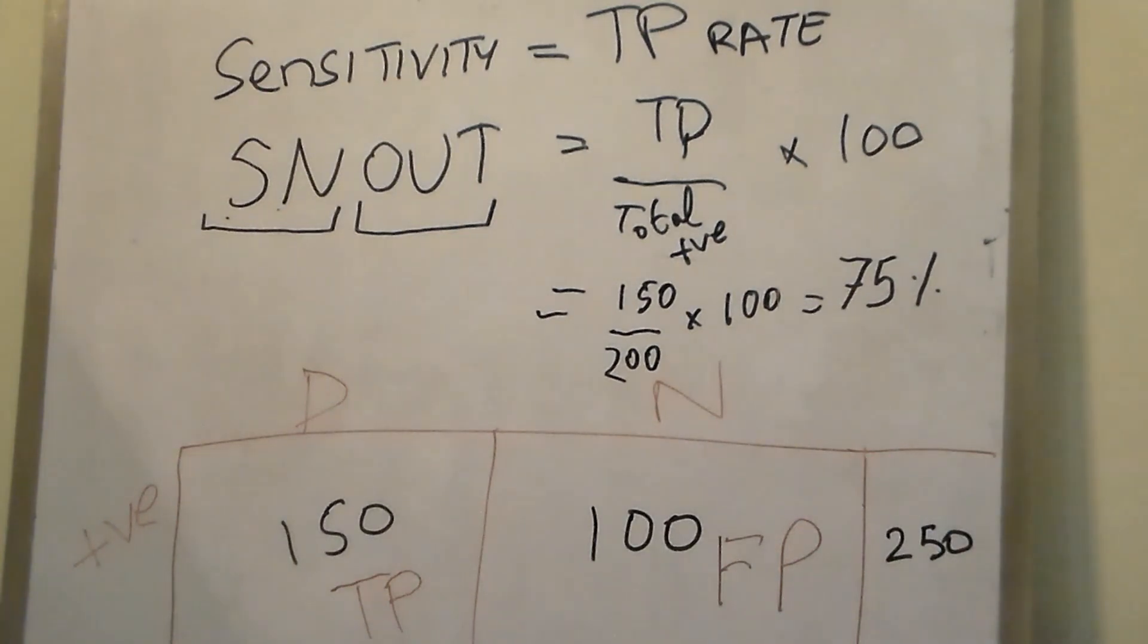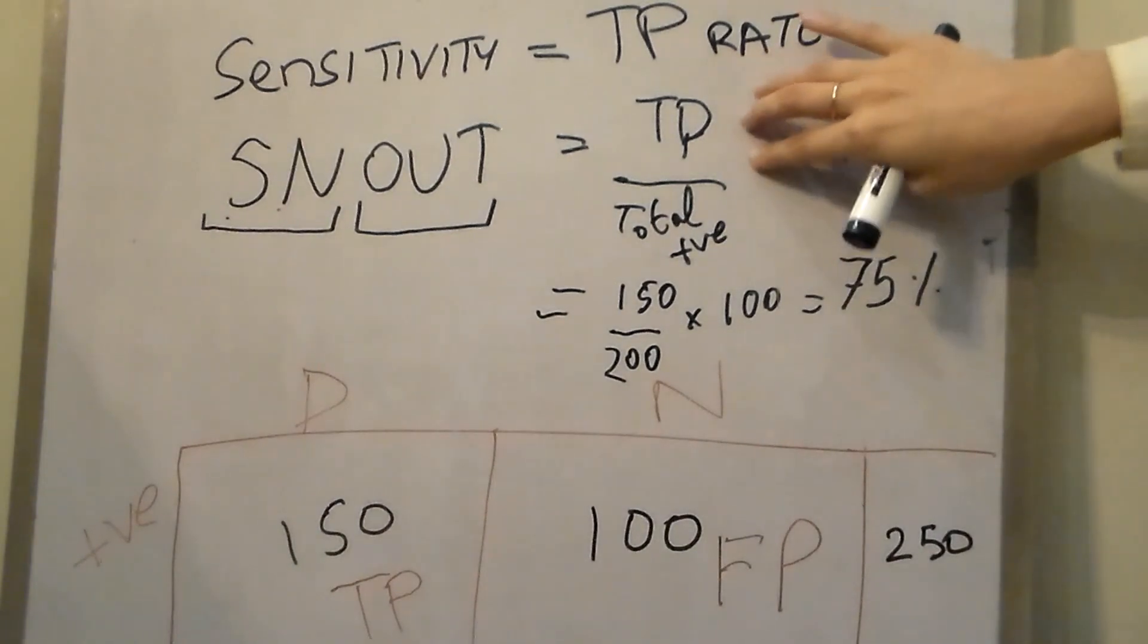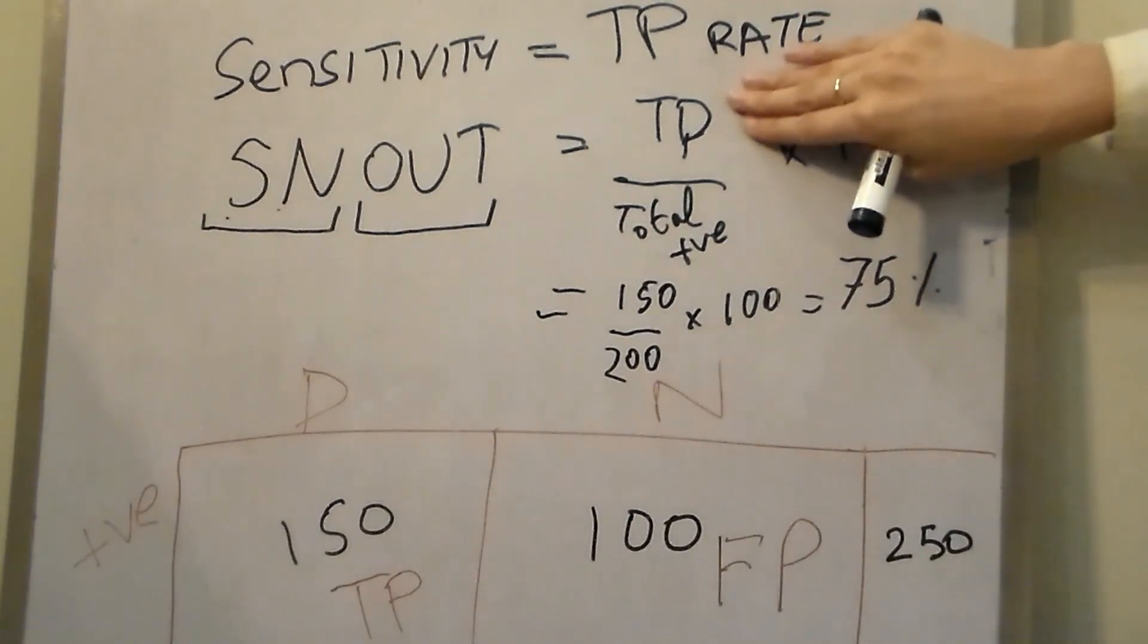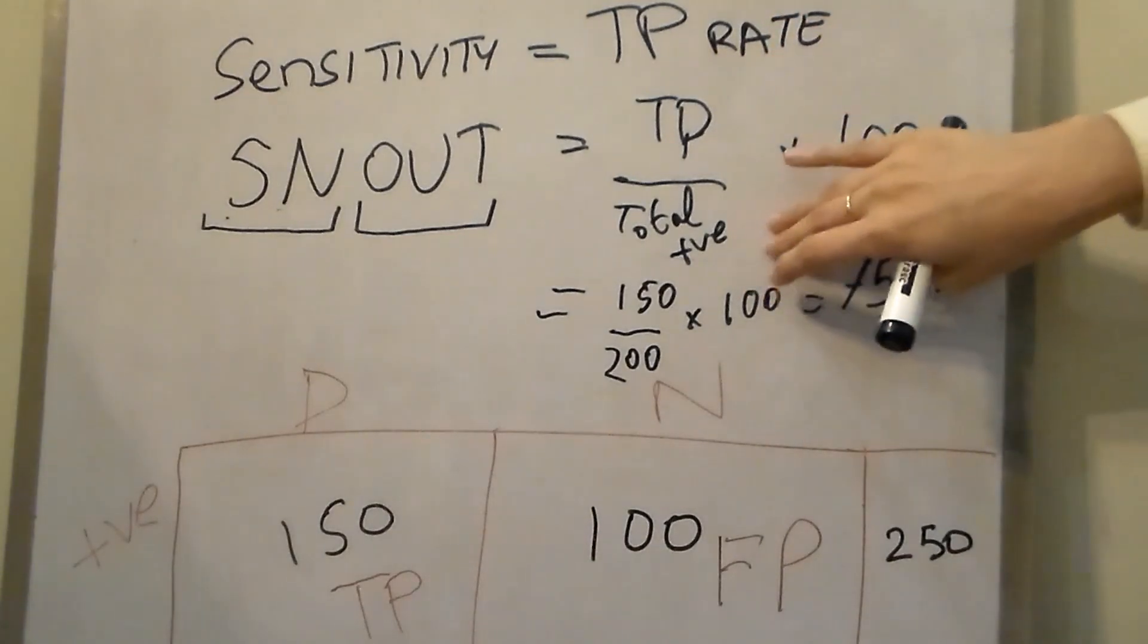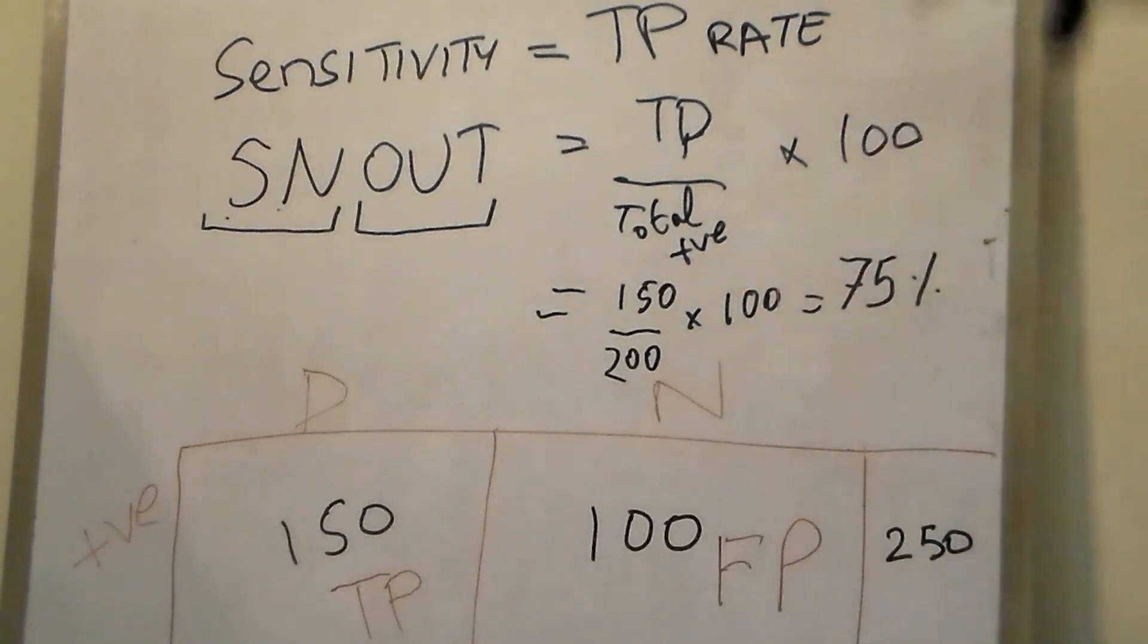Why is it used for screening? Because it tells you how many people it was able to detect who actually had the disease out of the total number who had the disease. The better a test is at catching people who actually have the disease, the better it is as a screening test.